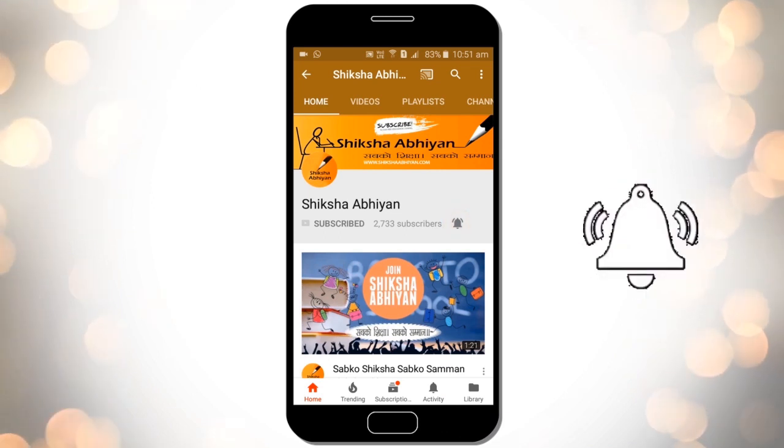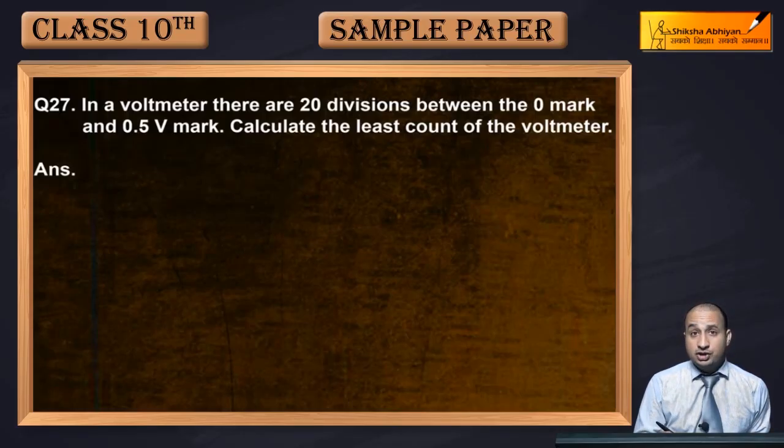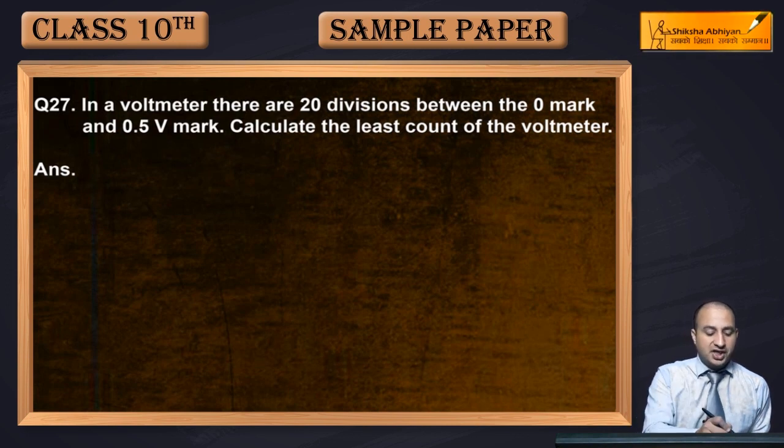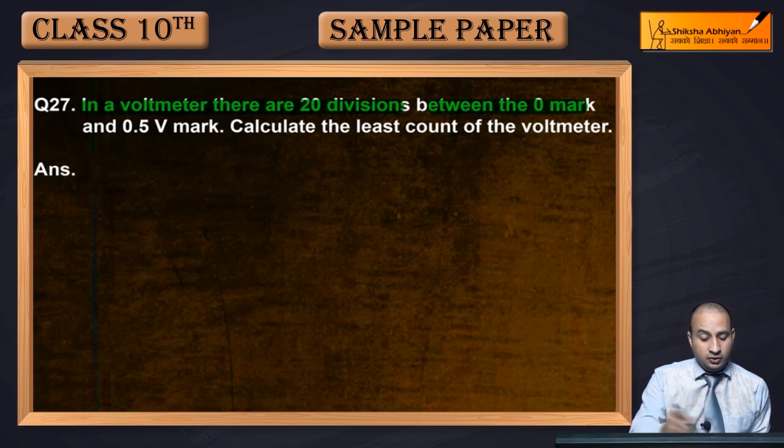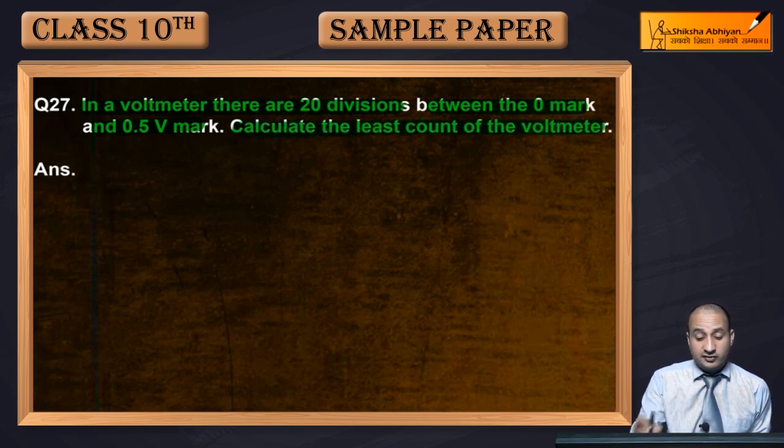Now see question 27. The question is: in a voltmeter there are 20 divisions between the 0 to 0.5 volt mark. Calculate the least count of the voltmeter.